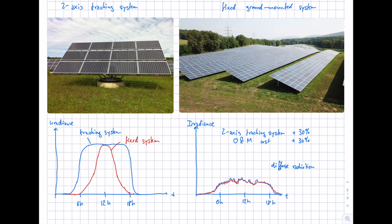In the future, tracking systems may become more interesting because they produce a flatter energy curve over the day, without the sharp peak at noon. This could help stabilize the electric grid. However, at the moment from an economic point of view, it typically makes more sense to install fixed ground-mounted systems.